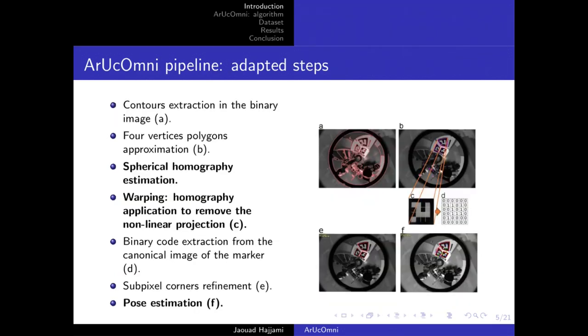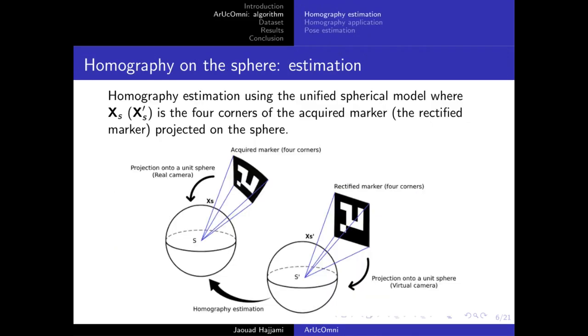In ArUco Omni, we focused on three key steps to be able to detect markers on panoramic images: homography estimation to get the canonical form of the potential marker, homography application to remove the non-linear projection, and finally pose estimation. All these steps are formalized on the sphere of the unified central projection model.